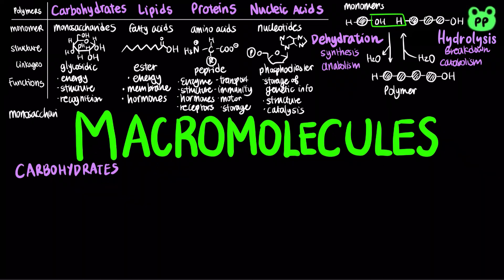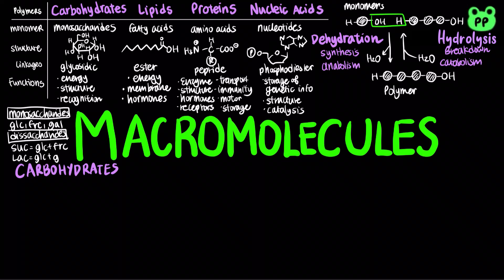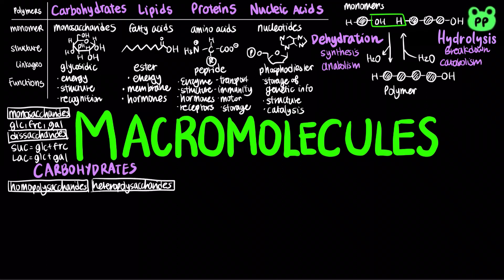The most common monosaccharides include glucose, fructose, and galactose. The most common disaccharides include sucrose, which is a glucose molecule linked to a fructose molecule, and lactose, which is a glucose molecule linked to a galactose molecule. There are two main types of polysaccharides: homopolysaccharides, which contain only a single type of monomer, and heteropolysaccharides, which contain two or more different kinds of monomers.